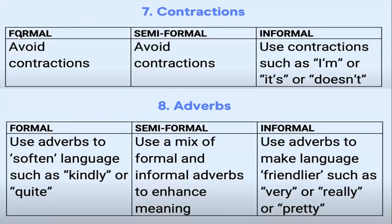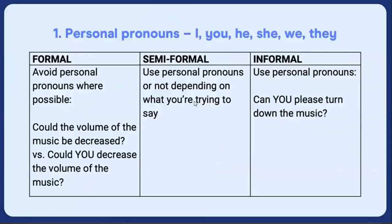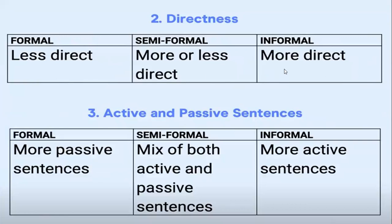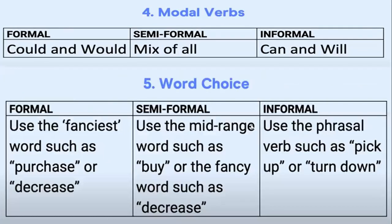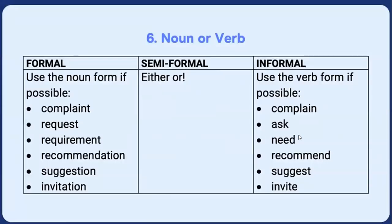These are the 8 things you need to consider for your letter tone. First, personal pronouns — avoid in formal letters, use freely in informal. Second, directness — less direct in formal, more direct in informal. Third, active-passive — passive sentences in formal letters, active sentences in informal. Fourth, modal verbs — use 'could' and 'would' in formal, 'can' and 'will' in informal. Fifth, word choice — formal words for formal letters, informal words otherwise. Sixth, noun or verb — formally use nouns, informally use verbs.